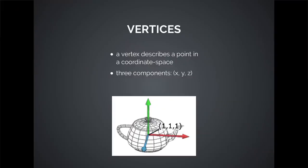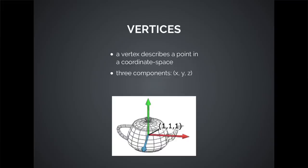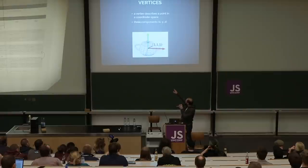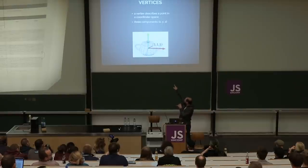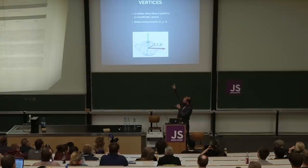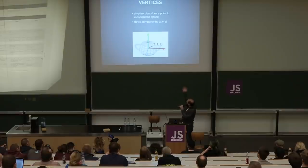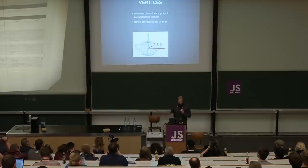Vertices — you probably all know vectors from math at school. A vertex is just the term used in 3D graphics for vectors in math. It's basically just a single point somewhere in a coordinate space. In this example with the teapot, you can see the thin black line pointing to where the 1, 1, 1 coordinate is. Every vertex has three components in the direction of the x, y, and z axes.